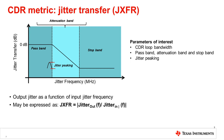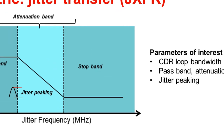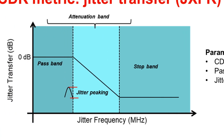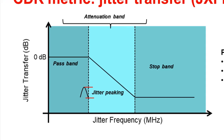Jitter transfer is a measure of the CDR output jitter as a function of its input jitter frequency. The jitter transfer is largely determined by the CDR bandwidth, where the bandwidth is commonly specified at the jitter transfer 3 dB cutoff point. The jitter transfer plot can be broken down into three segments based on jitter frequency. Within the stop band, the CDR effectively blocks input jitter from propagating to the output. Within the attenuation band, the CDR attenuates the jitter from input to output. Finally, within its pass band, the CDR tracks the input periodic jitter, and the input jitter simply passes through the retimer.